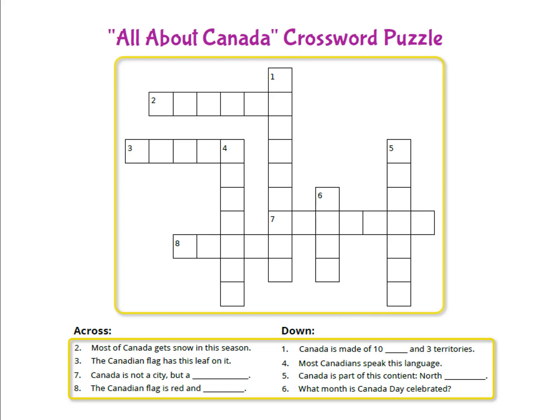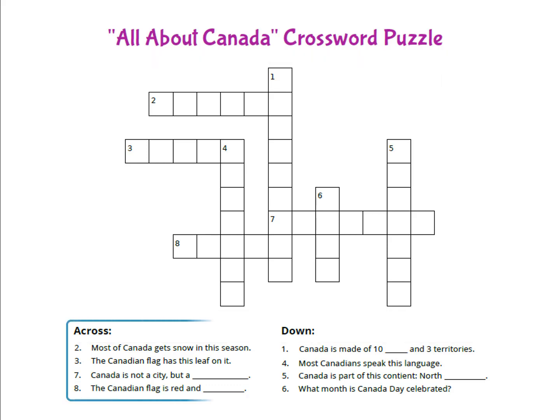These clues are for the words that go across in the puzzle from left to right. This is clue number two, and the answer goes across in the puzzle starting at this number two square. There are six squares, which means the answer to number two has six letters.